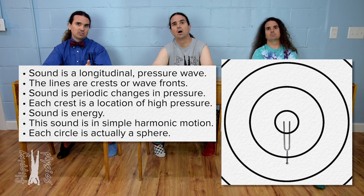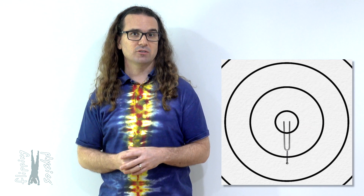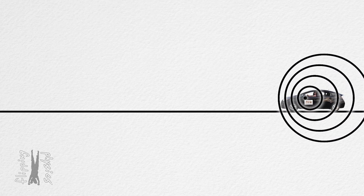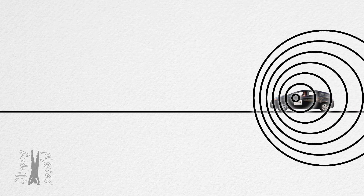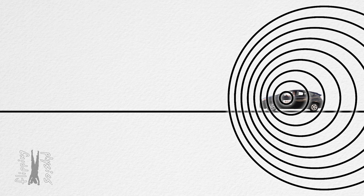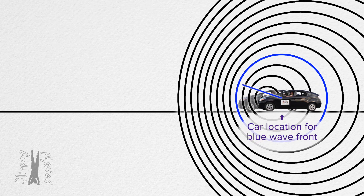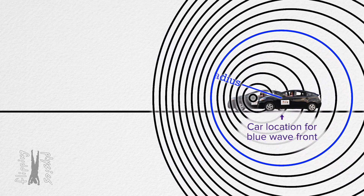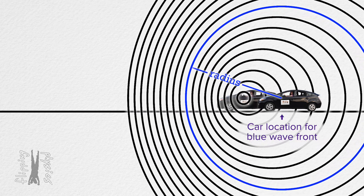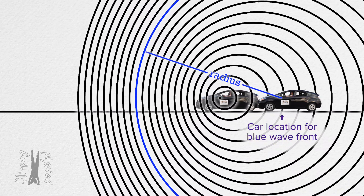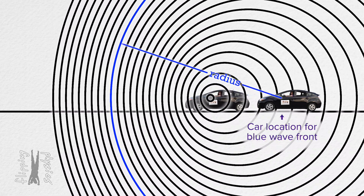It is a circle instead of a sphere here because this is a two-dimensional space. Very nice. Now remember, this animation is for a stationary sound source. Look at how the animation changes when the source of the sound is moving. I want to make sure that you are aware that each of those circles, which are actually spheres, represent the sound coming from where the sound source was when it emitted the sound. I have highlighted one of the wave crests so you can see that it is a sphere increasing in size, and the center of that sphere continues to be in the location where the car was when the sound was emitted by the speakers of the car.